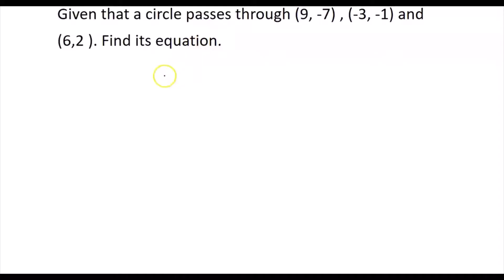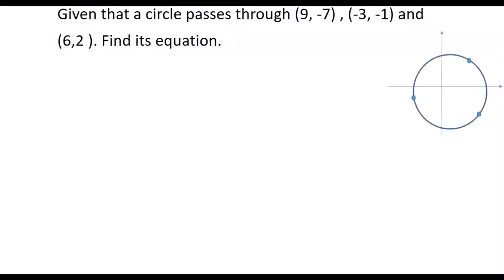Hi everyone, this video is going to show how to find the equation of a circle which passes through three points: (9, -7), (-3, -1), and (6, 2). If you would like a brief idea about this question, you can sketch a diagram showing the circle passing through these three points — (9, -7) somewhere here, (6, 2) roughly here, and (-3, -1) over here.